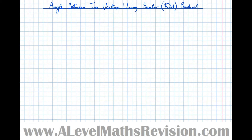In this video we're going to look at the angle between two vectors, and we're going to use the scalar, also called the dot product, to do that. First of all, let's define what the scalar or dot product is.